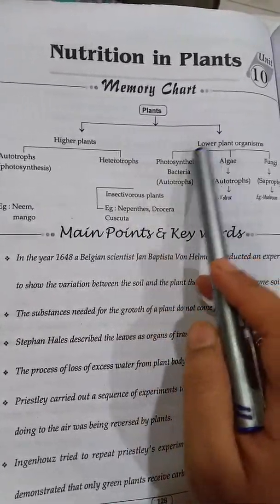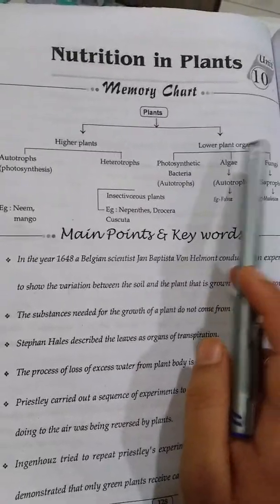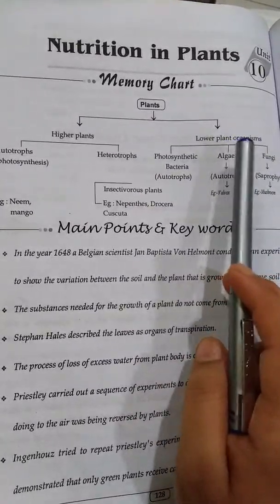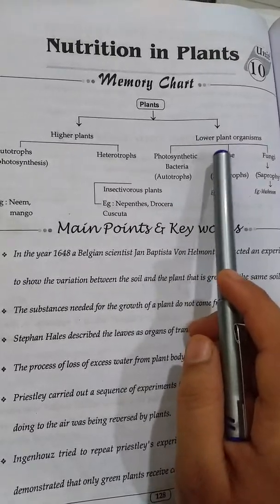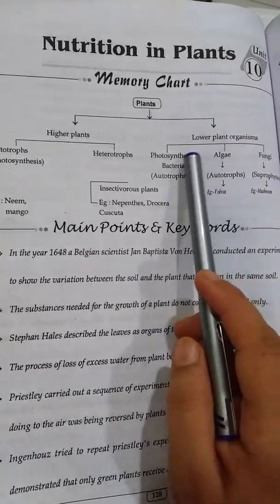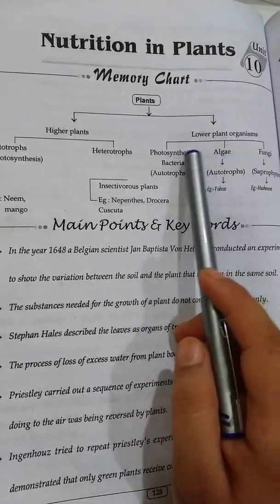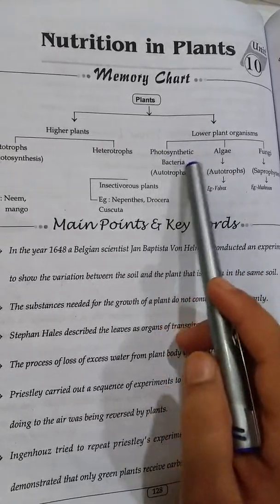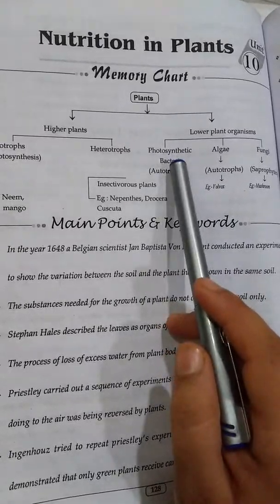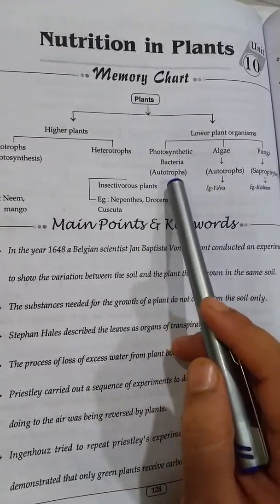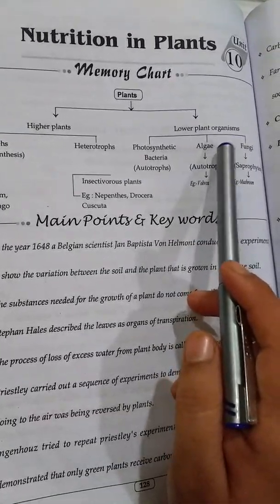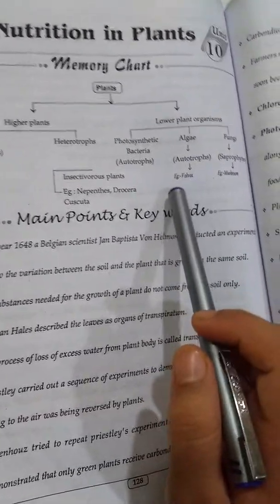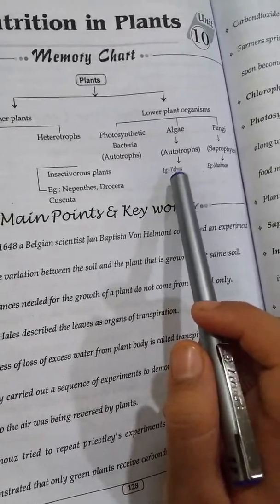Another type of plant is lower plant organisms. Lower plant organisms are described as small plants. The lower plant organisms include photosynthetic bacteria, which are present in autotrophic plants. Another one is algae, also present in autotrophic plants. An example is Volvox.